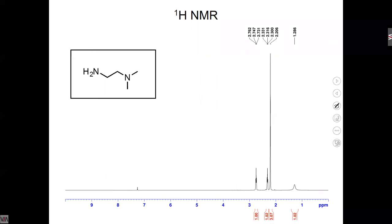If we look at a slightly more interesting case — same formula, so this would be N,N-dimethyl-1,2-ethylenediamine. We put both methyls on the same nitrogen. Now all of a sudden this nitrogen doesn't have any hydrogens, and these two CH2s are chemically distinct from each other. So now we have the methyl groups, both CH2s — that's three distinct types of hydrogens, plus the hydrogens on the amine at the far end. That should give us four signals.